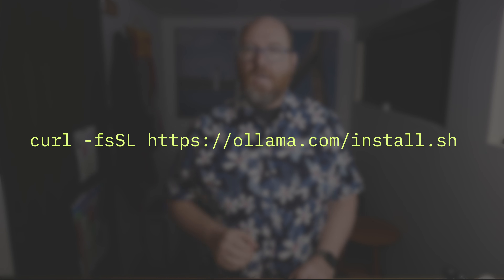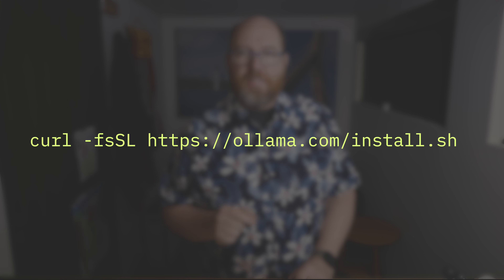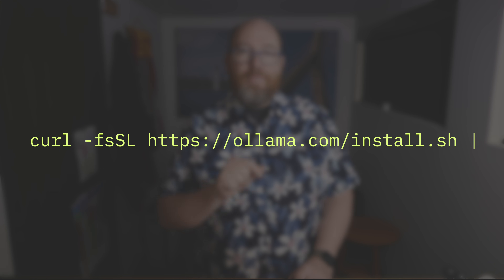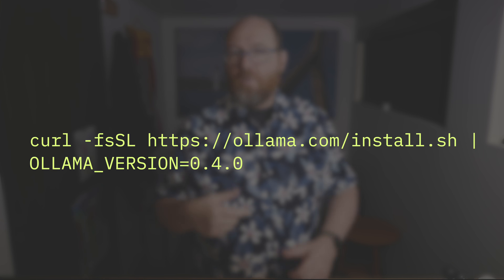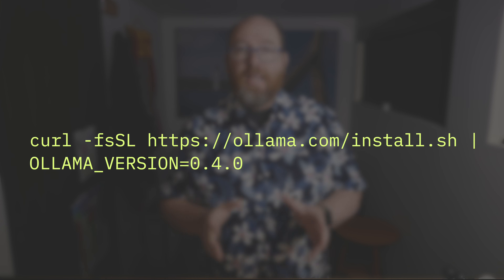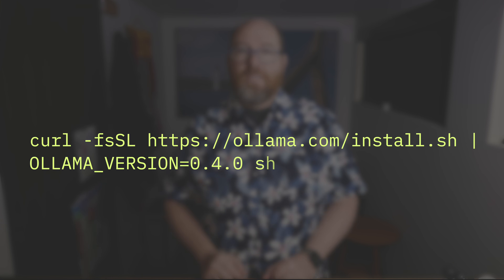If you want to install a different version, such as a pre-release or older version, just set the OLLAMA_VERSION environment variable at the command line before running the shell: curl -fsSL https://olama.com/install.sh piped to OLLAMA_VERSION=0.4.0 (or whatever version you like), then sh. It really is that easy.